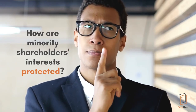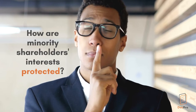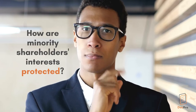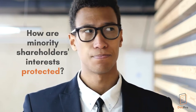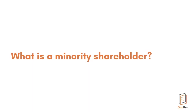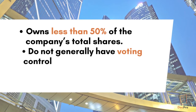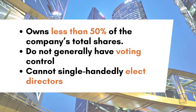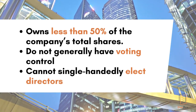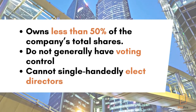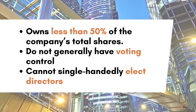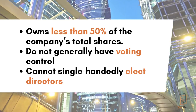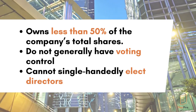Let's start by looking at what a minority shareholder is and what they're entitled to do. A minority shareholder refers to a shareholder who owns less than 50% of the company's overall shares. They don't generally have voting control of the company, nor can they single-handedly elect directors to the company board.